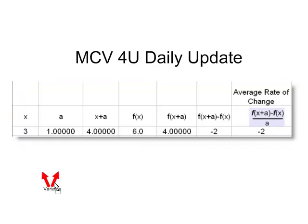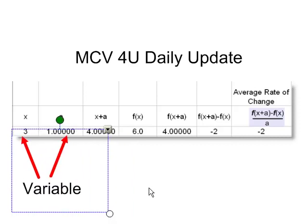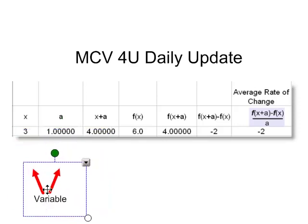When you do get your average rate of change tool finished, these two cells on your spreadsheet are variables. In other words, those are going to be numbers that you're typing in. So you might choose an x value of 4 and an a value of 2 and want to know the average rate of change between the x values of 3 and 5.